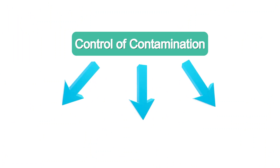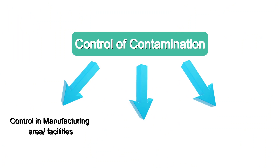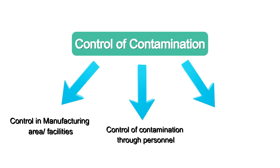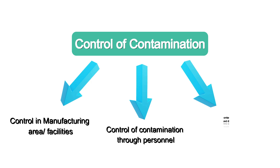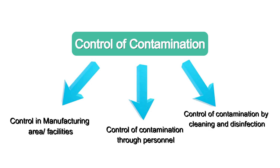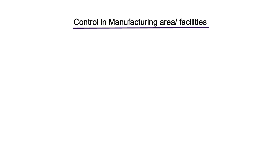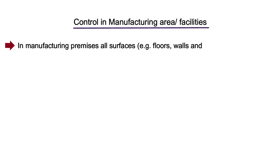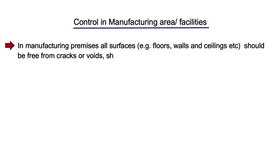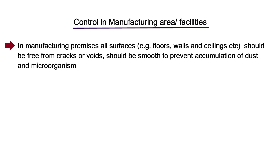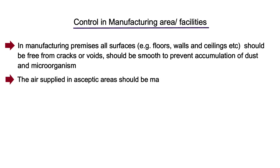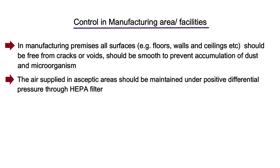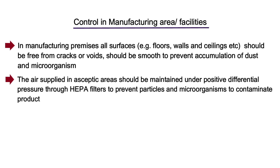Contamination can be controlled by control of contamination in the manufacturing area or facilities, by controlling contamination through people working there, and by control of contamination through cleaning and disinfection. In the case of manufacturing area or facilities, all surfaces of the manufacturing premises — for example, floor, walls, ceilings — should be free from cracks or voids, and surfaces should be smooth to prevent the accumulation of dust and the growth of microorganisms. The air supplied in the aseptic area should be maintained under positive differential pressure through HEPA filters to prevent particles and microorganisms from contaminating the product or process.